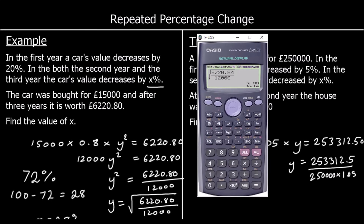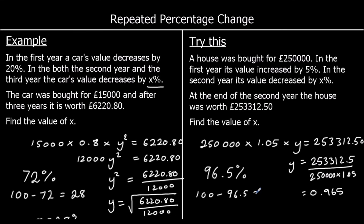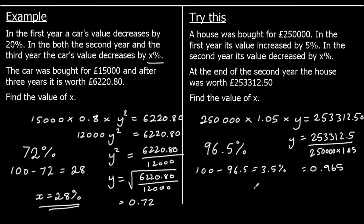We type that into the calculator and we've got 0.965. So our multiplier is 0.965. As a percentage — times by 100 — that's 96.5%. So what percentage decrease has there been? 100% take away 96.5% is 3.5%. So our percentage decrease is 3.5%.